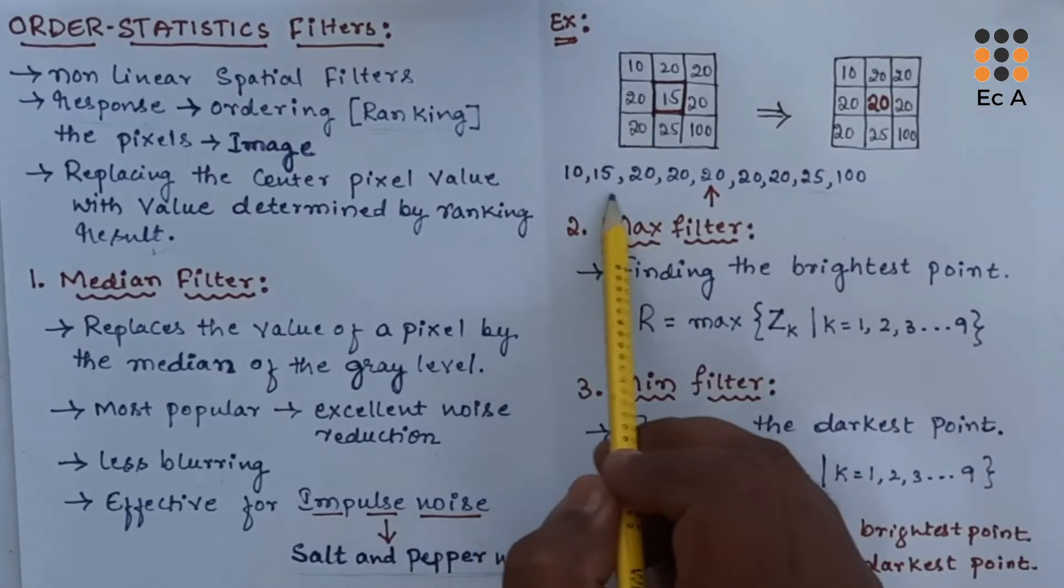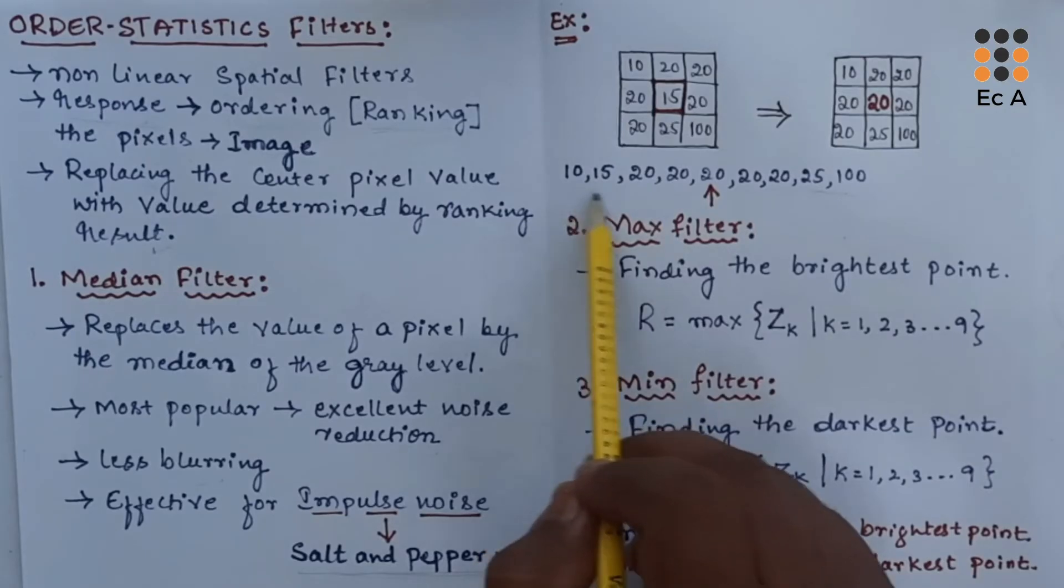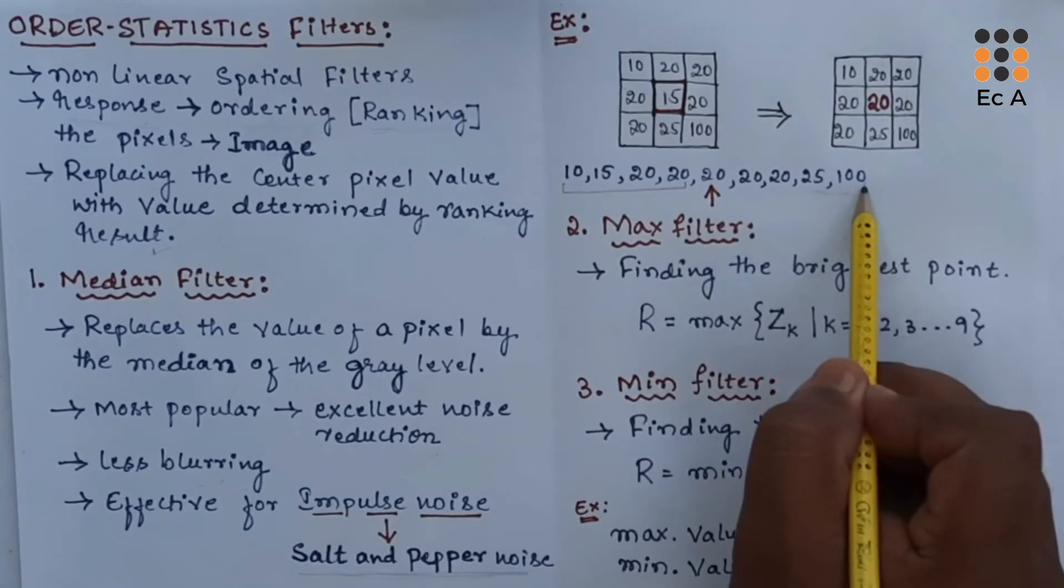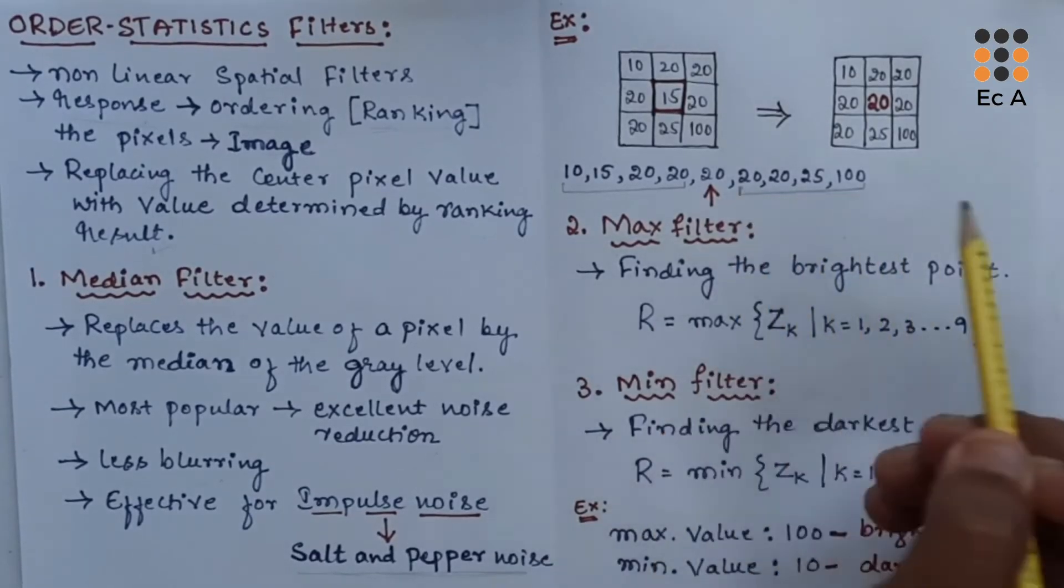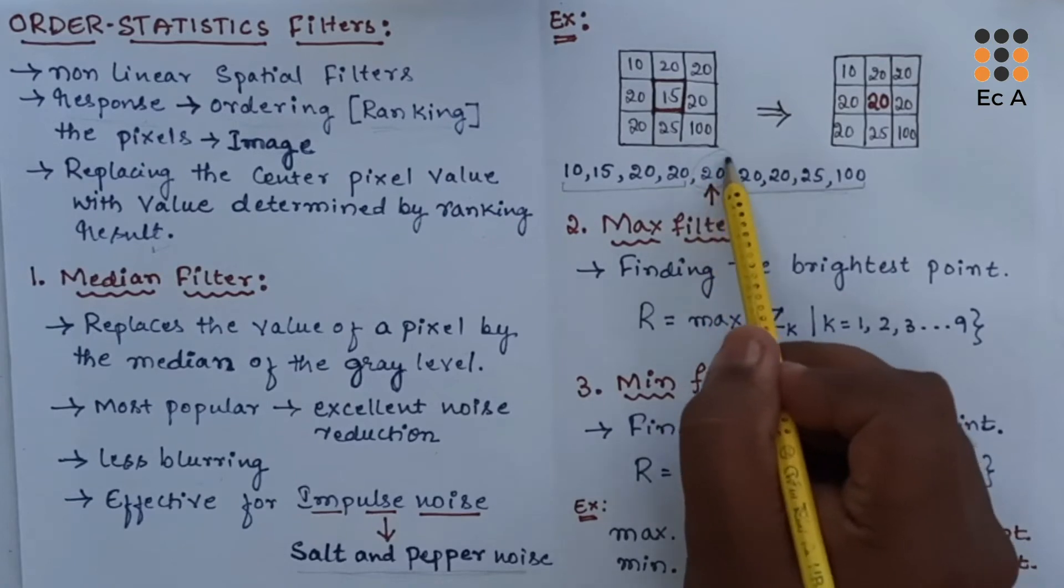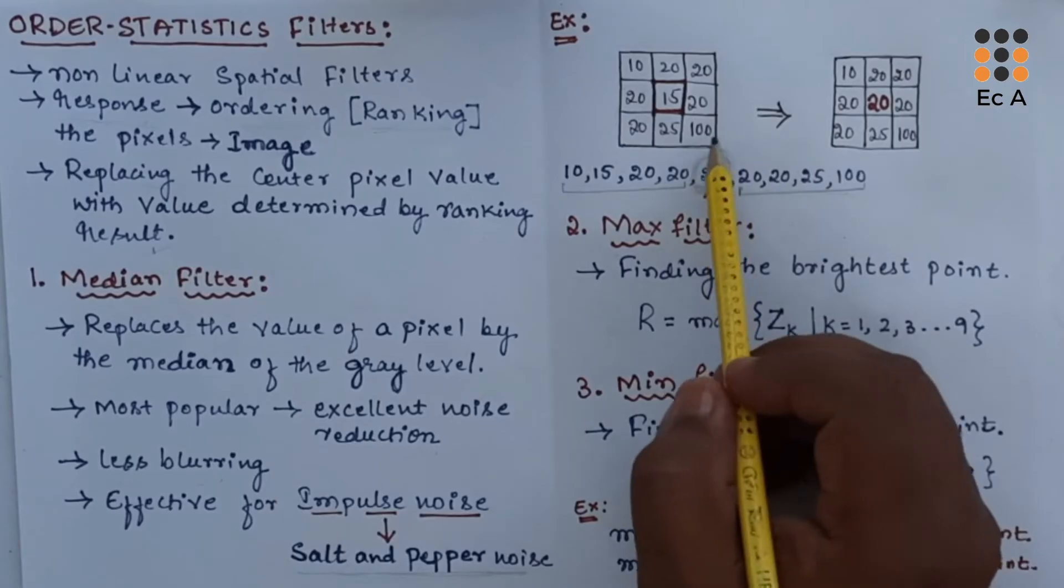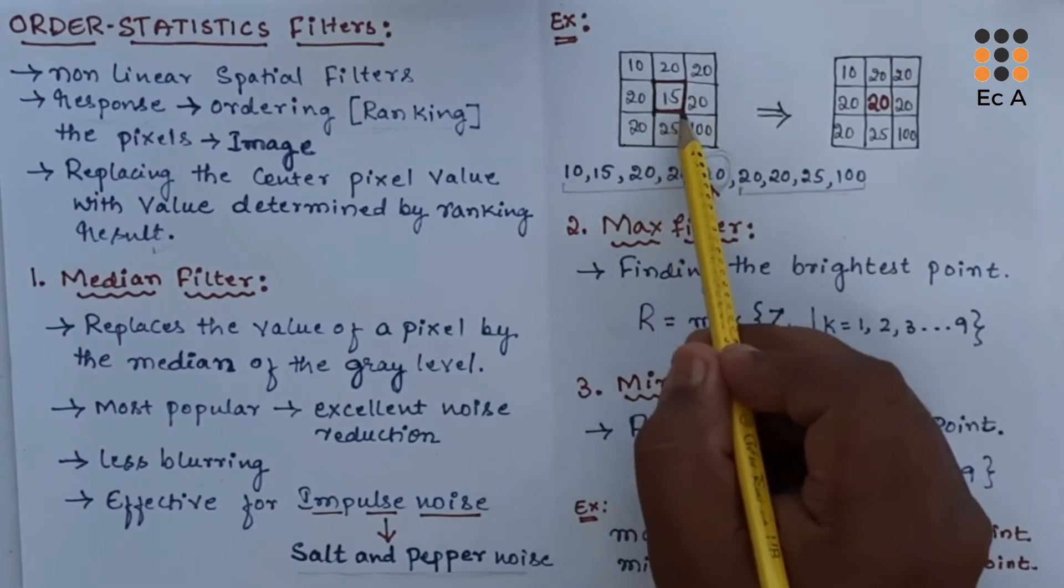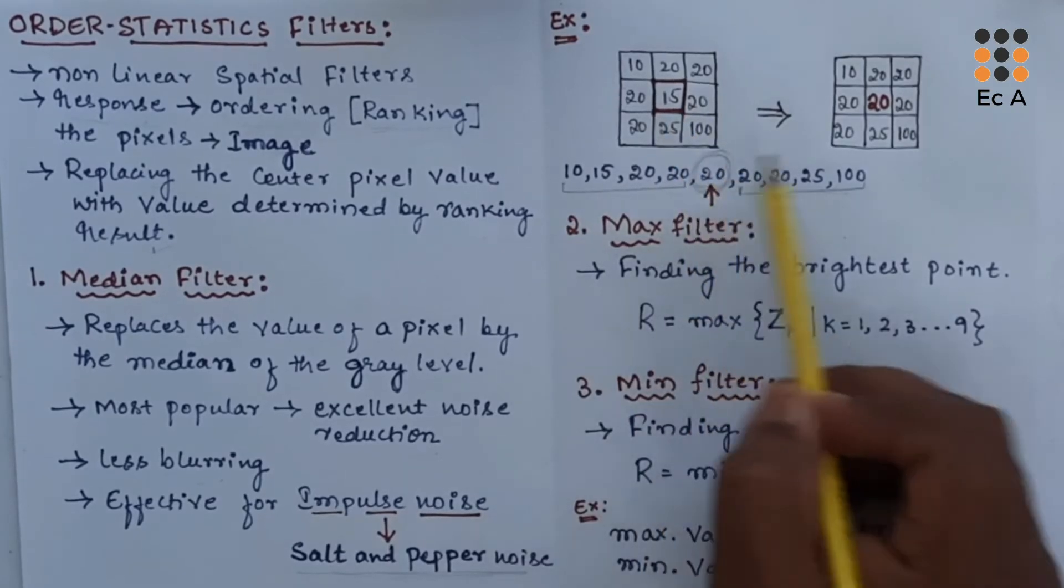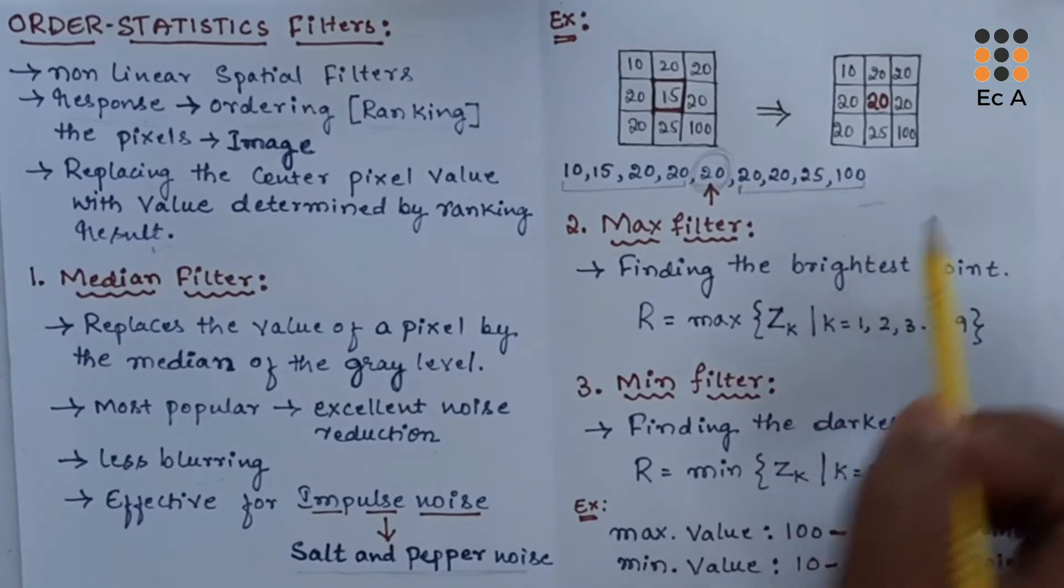You can see from 10 to 100. Once the image pixels are arranged in ascending order, we will take out first four and last four values. The remaining value is the median value. This median value will be replaced at the center pixel value. Here we are having 15, so that value will be replaced with 20. This is how the median filter works.